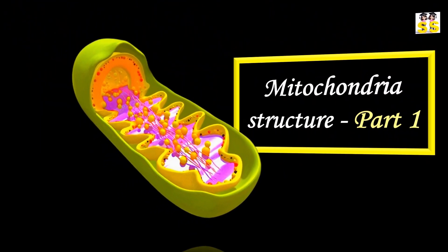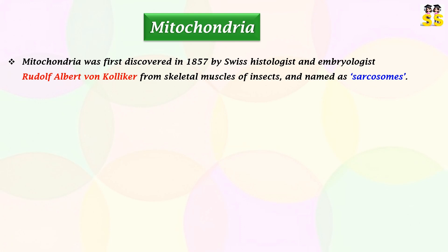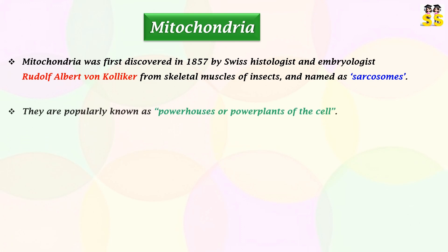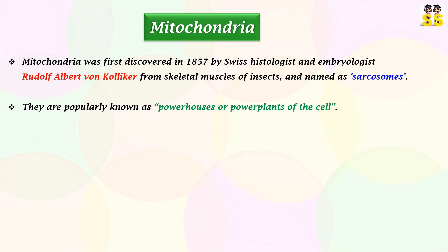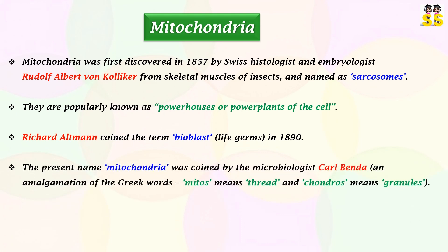Mitochondria Structure. Swiss histologist and embryologist Rudolf Albert von Kolliker first observed mitochondria from skeletal muscles of insects and named them sarcosimps in 1857. They are referred to as powerhouses or power plants of the cell. It was coined as bioblast by Richard Altman in 1890. Carl Benda later renamed it as mitochondria. This term was derived from two Greek words: mitos meaning thread and chondros meaning granules.